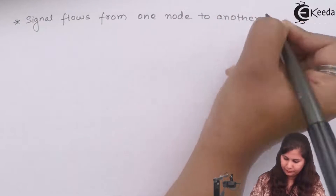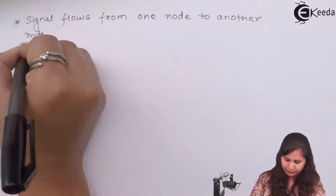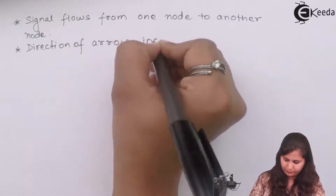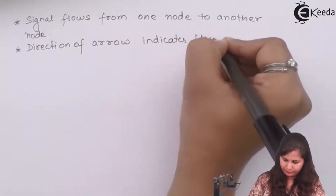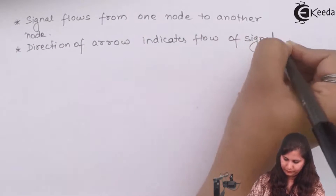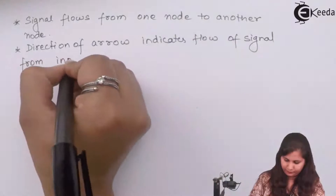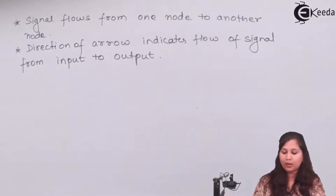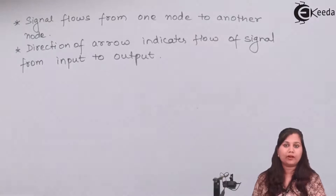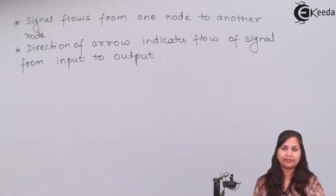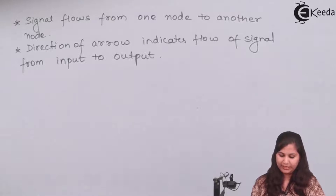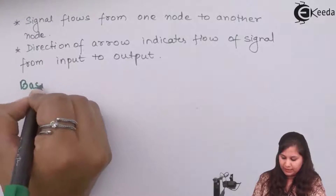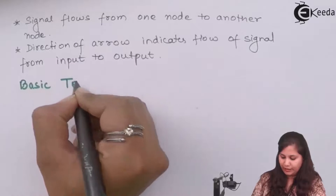So this type of representation is called the signal flow graph technique, and in this, signal flows from one node to another node. Now let us study some of the terms which are commonly used in the signal flow graph technique - the basic terminology of the signal flow graph.